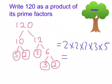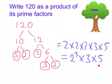Two times two is the same as two squared, and two times two times two is the same as two cubed. So we can simplify this and write 2³ times 3 times 5, and that is how you write 120 as a product of its prime factors.